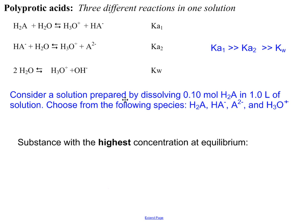So let's take a solution where I have some generic acid, H2A, 0.1 molar in one liter of solution. Which of these four substances - the acid, its monoprotic anion, its anion, or the hydronium ion - will be in the highest concentration when it's all at equilibrium?